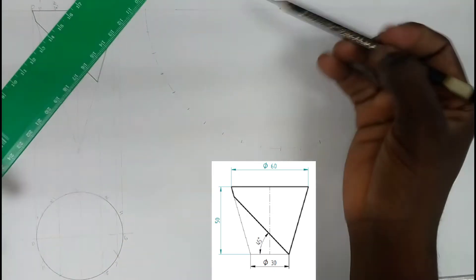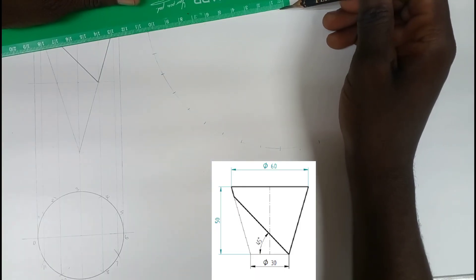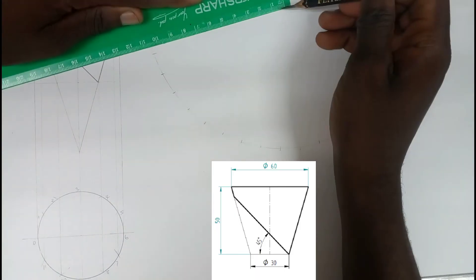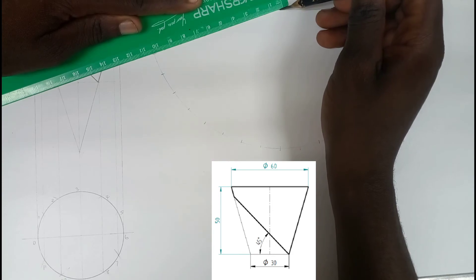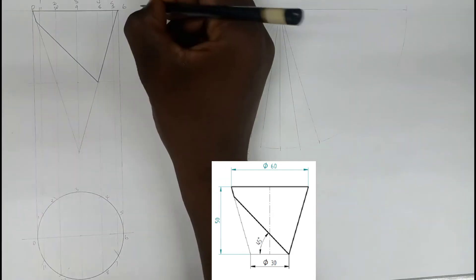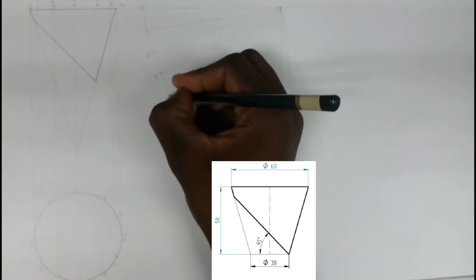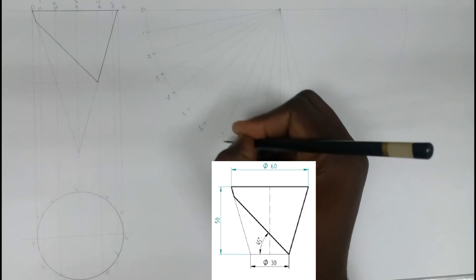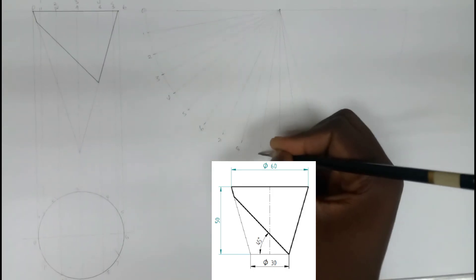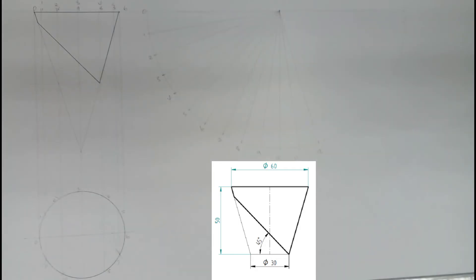Join this point with the center point. After that, remember the points: this is 0, 1, 2, 3, 4, 5, 6, 7, 8, 9, 10, 11, and 12.